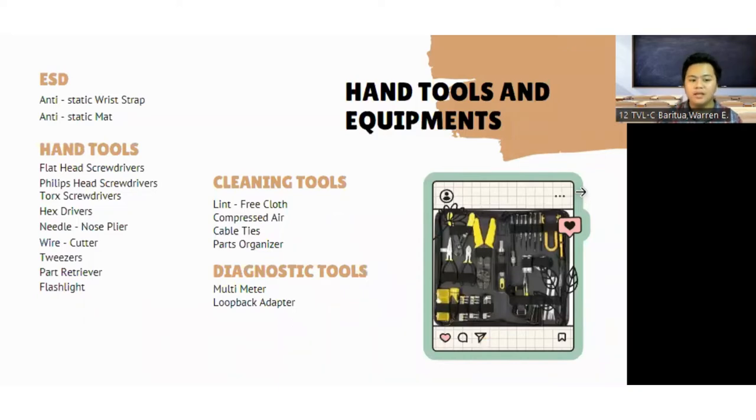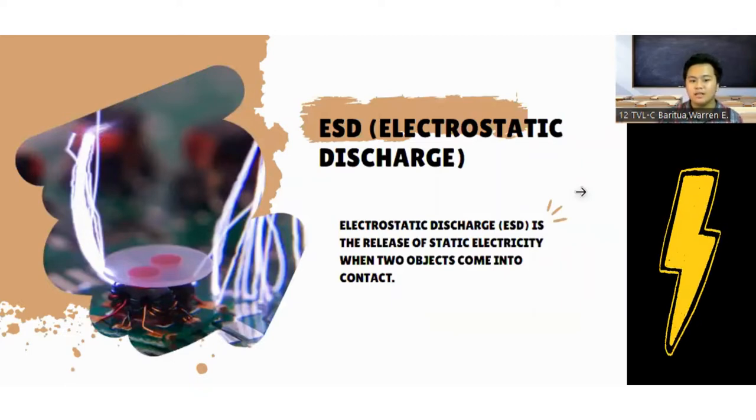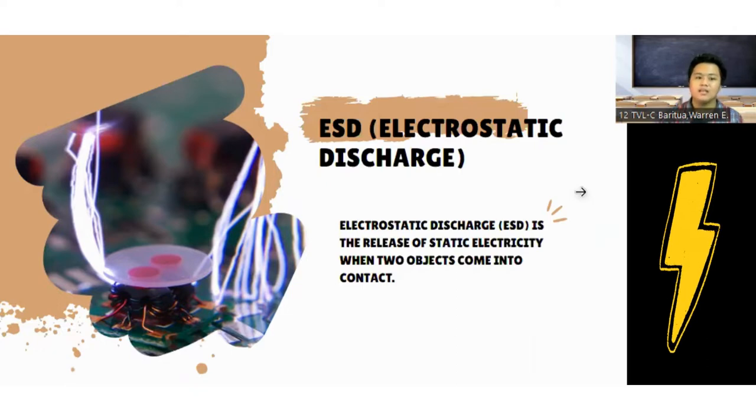We will begin with electrostatic discharge or ESD. ESD is the release of static electricity when two different materials come into contact or rub together. One familiar ESD example is the static electricity we feel after drying clothes in a dryer.